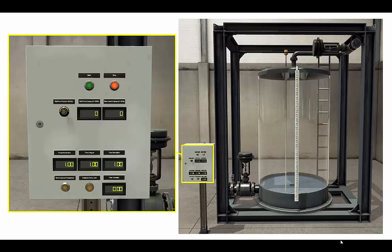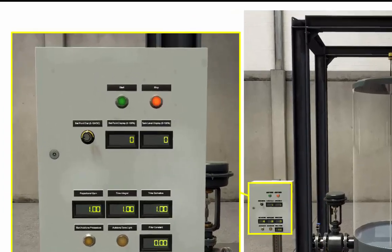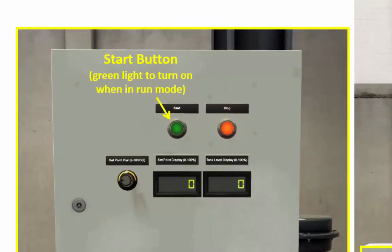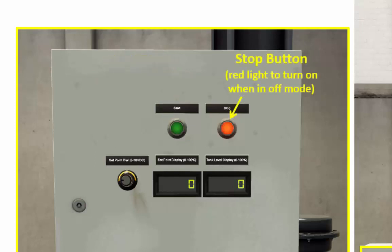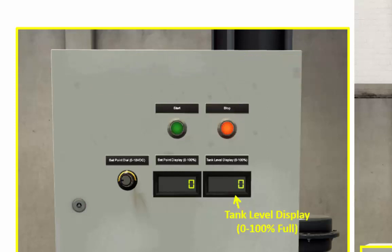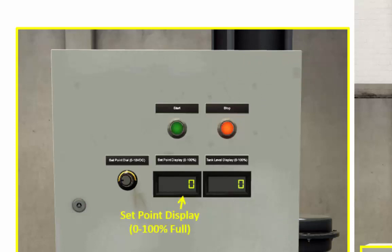This is the control panel I've set up. It has a start button, and you'll need to program this so that the green light is on when the machine is in run mode. It also has a stop button — the red light should be on when the machine is in off mode. This digital display should show the level of fluid in the tank between 0 and 100% full. This other digital display should show the desired set point, or the desired fill level for the tank.